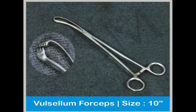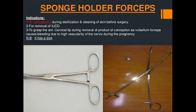The sponge holder forceps are used to remove gauzes during sterilization and cleaning of skin before surgery, for removal of the IUCD, and to grasp the anterior cervical lip during removal of the products of conception. Vulsellum forceps are avoided in pregnancy as they cause bleeding due to high vascularity of the cervix.